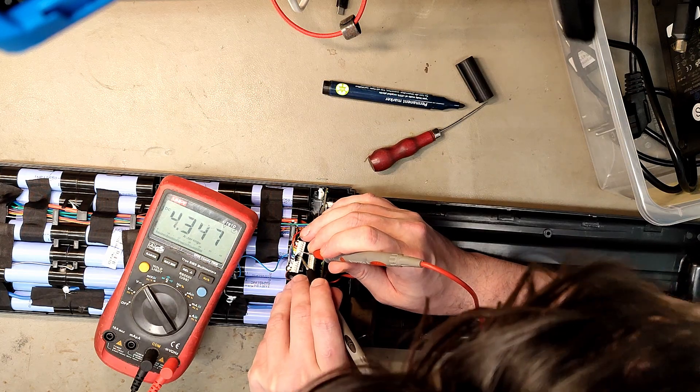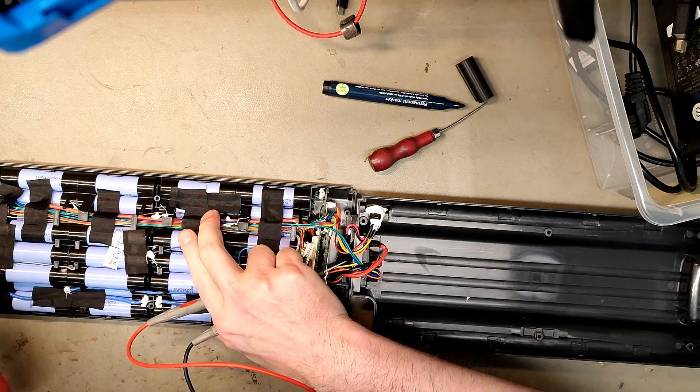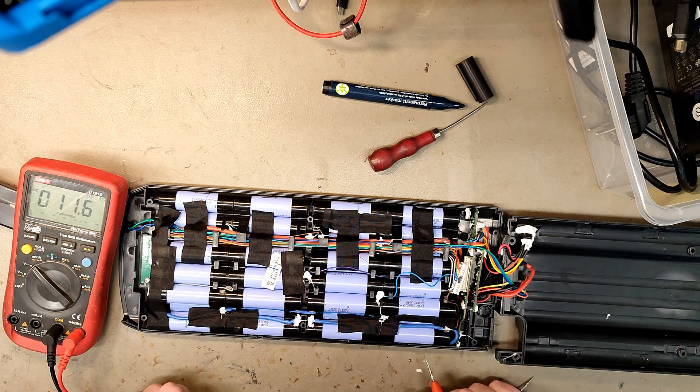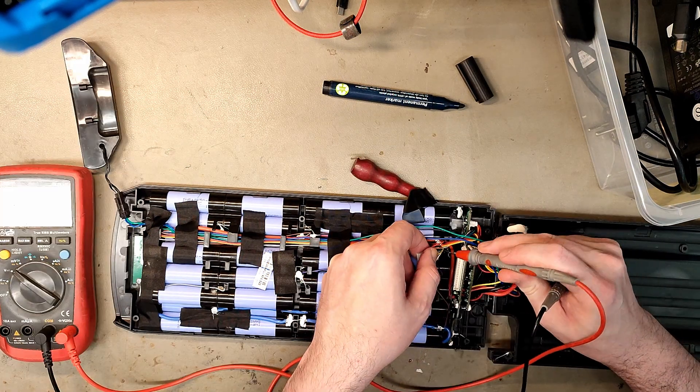And the green one is going here and the yellow one is going here. 4.347V, and it's right on the cells.